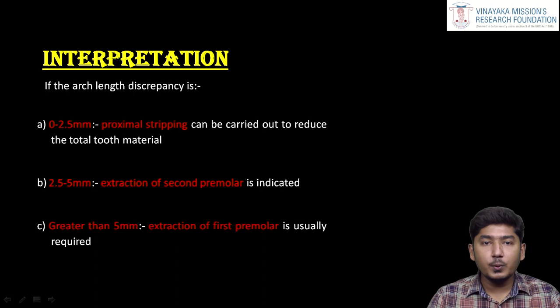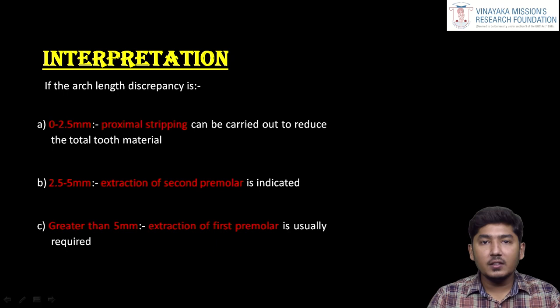The interpretation is: if the discrepancy — that is, tooth material minus arch length — is between 0 to 2.5 mm, the case is indicated for proximal stripping. If it is 2.5 to 5 mm, it indicates extraction of the second premolar, based on the concept that the mesiodistal diameter of the first molar is bigger than the second molar. If the discrepancy is more than 5 mm, we can extract the first premolar.